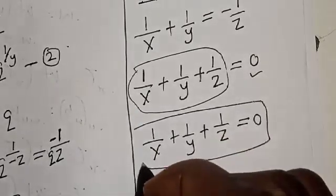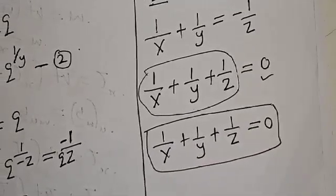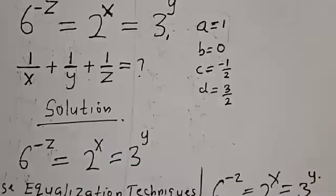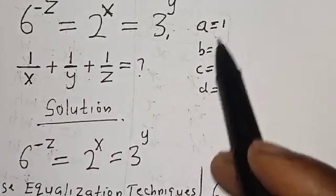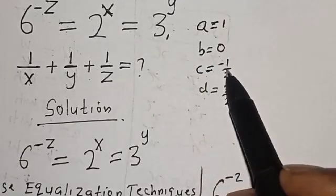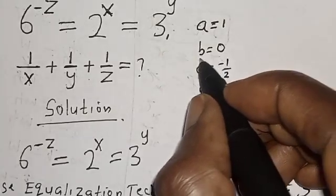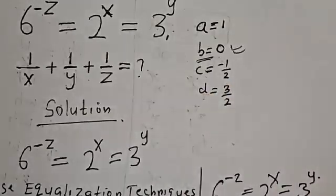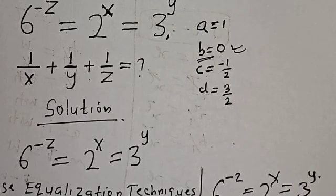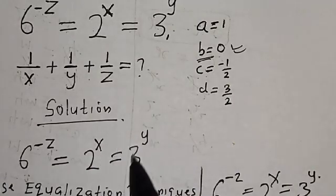Therefore our final answer is zero. Looking at the options: A is equal to 1, B is equal to 0, C is equal to minus 1 over 2, and D is equal to 3 over 2. The correct option is B, which is zero. If you have enjoyed the class, please don't forget to like, share, comment and subscribe. Thank you.